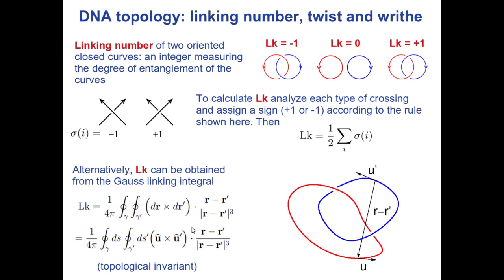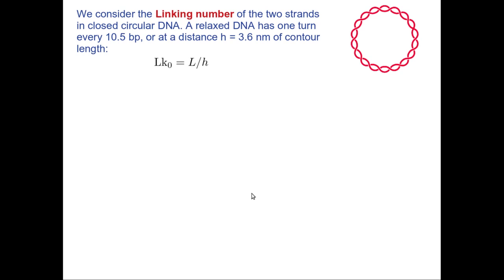Summarizing: for any two given closed curves I can associate a positive or negative integer, and this is a topological number that measures the degree of entanglement of these two closed curves. Now, why is this interesting for DNA? In a DNA molecule I have naturally two curves, which are the two strands forming the double helix. I consider closed circular DNA. While we typically see open linear molecules, DNA can also be closed, as seen in many biological cells — for instance, in bacteria the DNA has a circular shape.